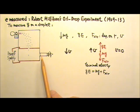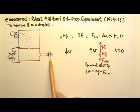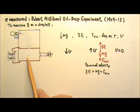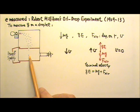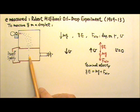Therefore, the experimenter has to follow the same droplet for a while to manipulate its motion and record enough sets of data on the same droplet in order to get a good measurement of the charge Q on that particular droplet.